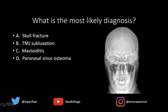If we take a look at the mastoid air cells — these are the areas right here — they're well aerated. There's no opacification of the mastoid air cells bilaterally to suggest mastoiditis. So that leaves us with a paranasal sinus osteoma, which is in fact the right answer. This is the right maxillary sinus, the left maxillary sinus.